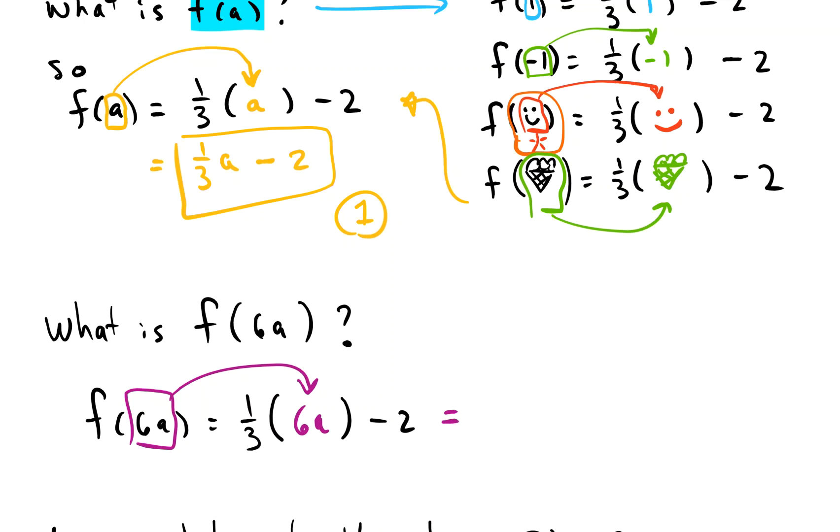So we have 6a divided by 3 minus 2, and this 6 is really the same thing as 3 times 2, and the 3 can cancel with 3 in the bottom. So what does that leave us with? 2a minus 2. OK, there's the second piece.